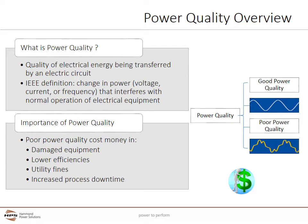For utilities, poor power quality can cause customer dissatisfaction and revenue losses. Harmonic currents require extra generation and power line capacity and significantly increase power system losses. Utilities will fine companies if they cause power quality to fall below IEEE 519 limits, as measured at the utility service entrance. For customers, the system disturbances caused by poor power quality can cause millions of dollars in production losses and damage equipment.